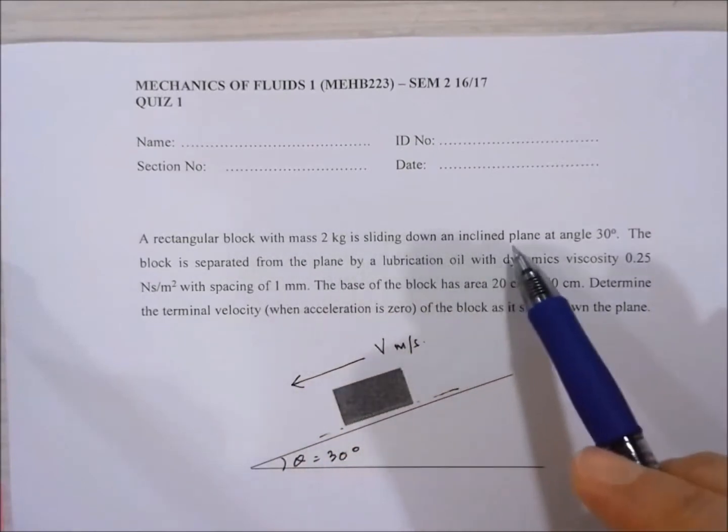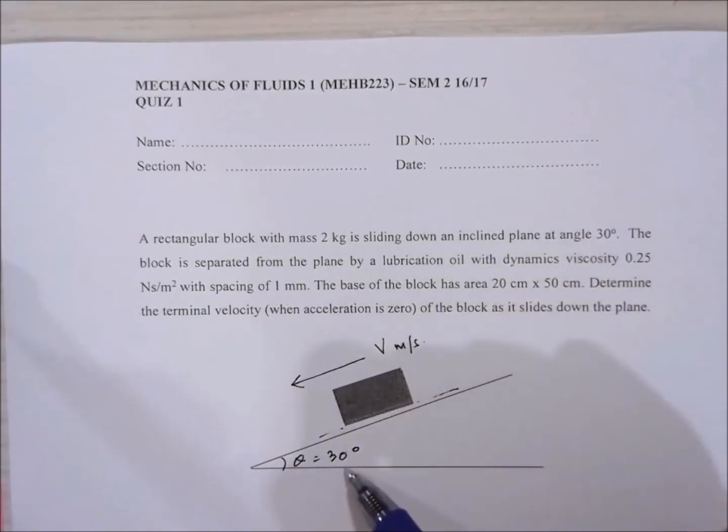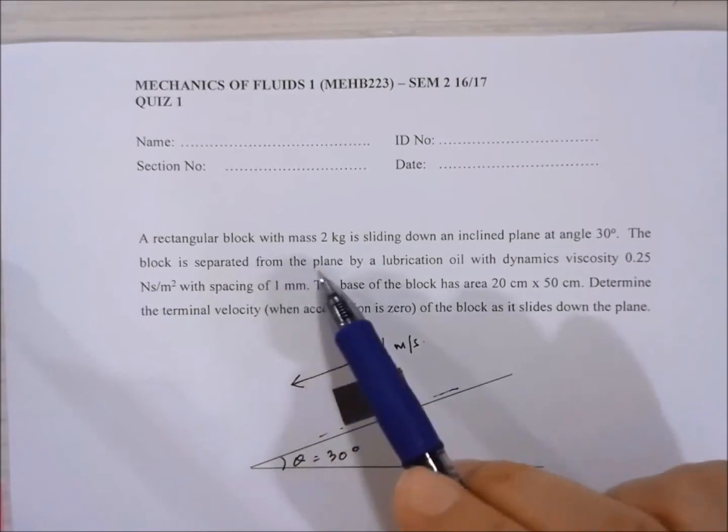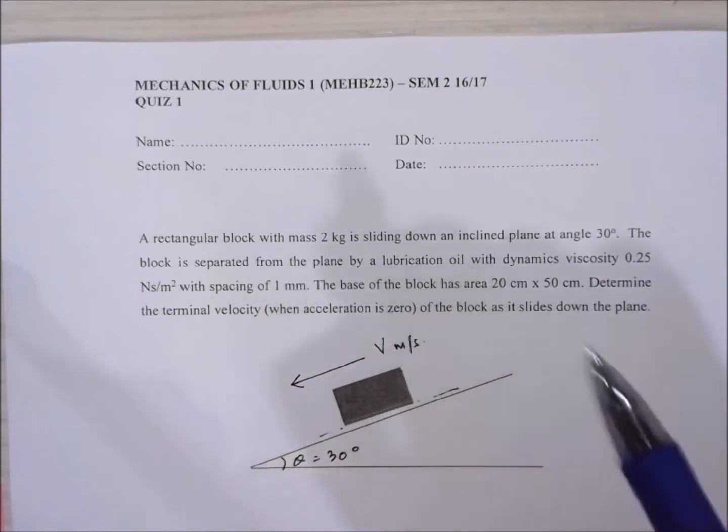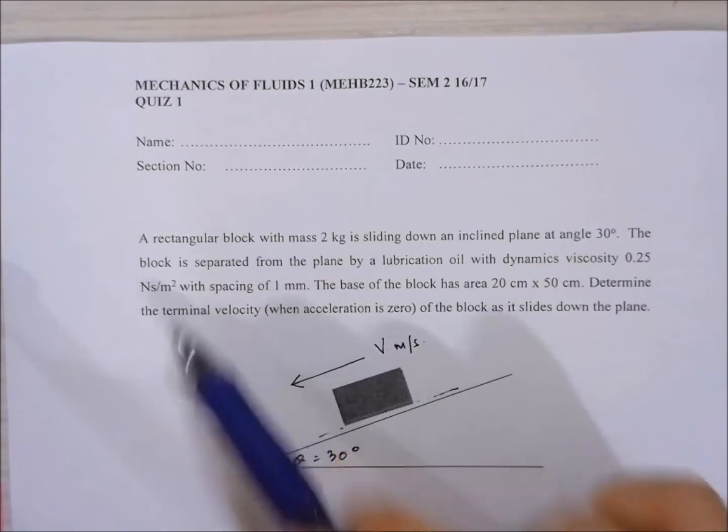The block is separated from the plane by a lubrication oil which has a dynamic viscosity of 0.25 Ns per meter squared and the spacing between the block and the ramp is 1 mm.